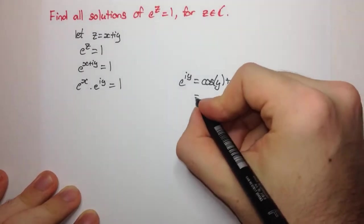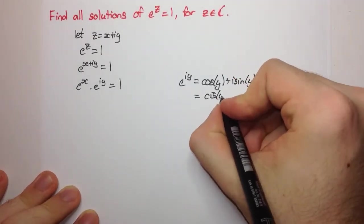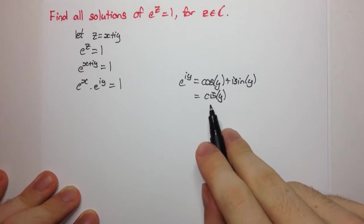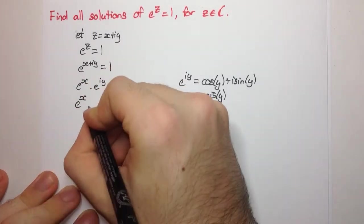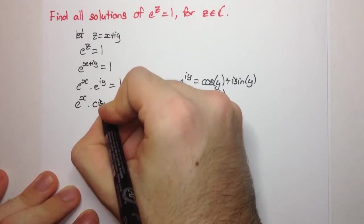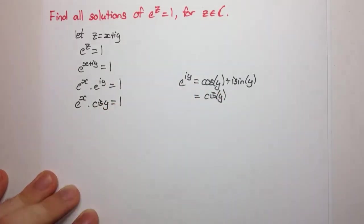We can apply that here, and this can be abbreviated to cis y, just for abbreviation purposes. So let's do that. e to the x times cis y equals 1.